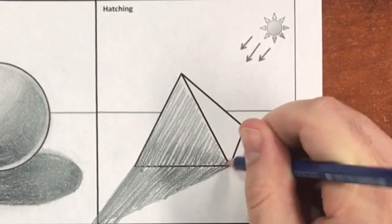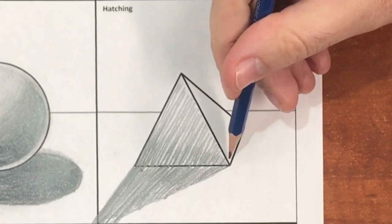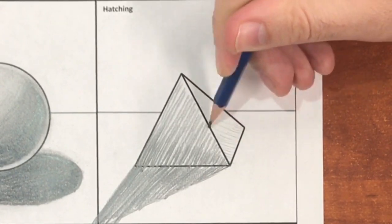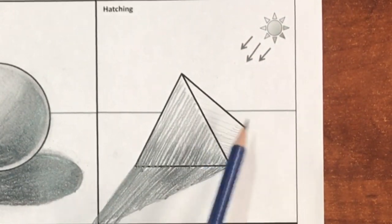You can add multiple layers going in the same direction in order to produce different tones and transitions. As I begin to work on another side, I change the direction of my lines in order to match the direction of this side of the shape.